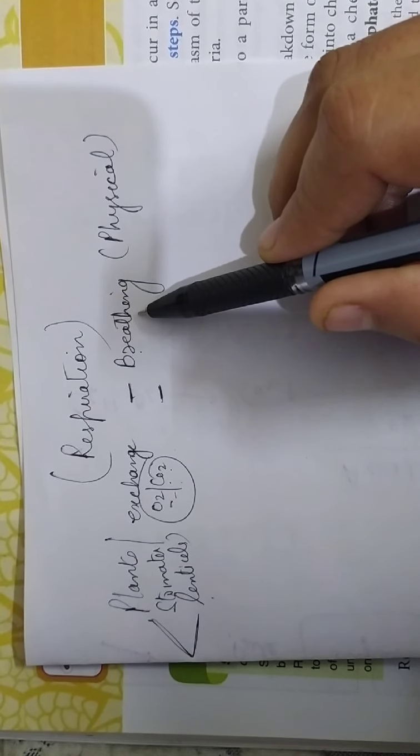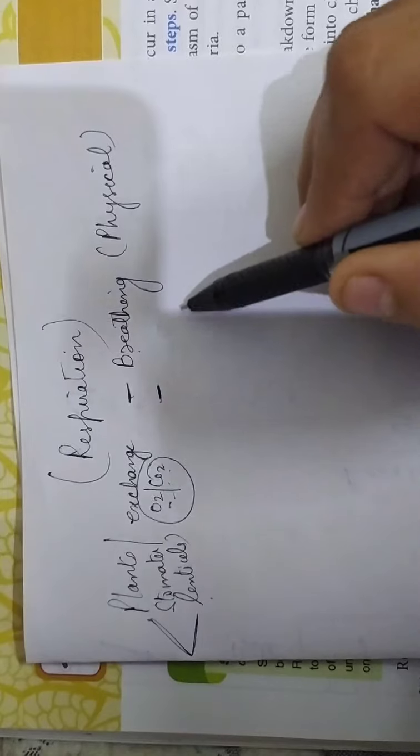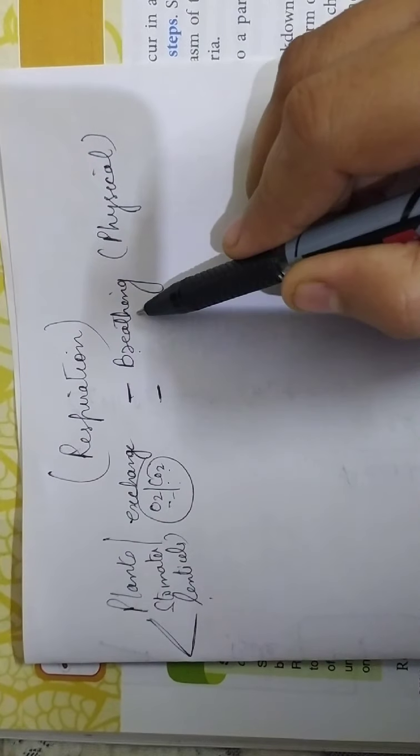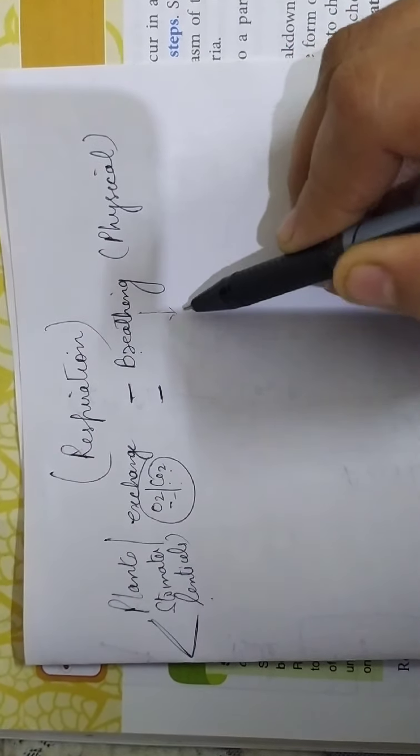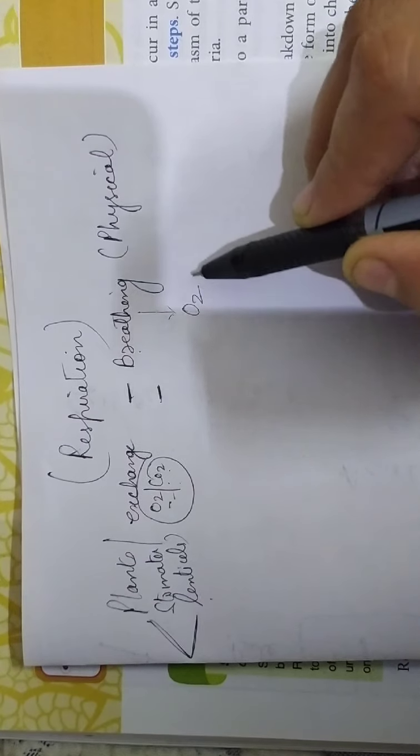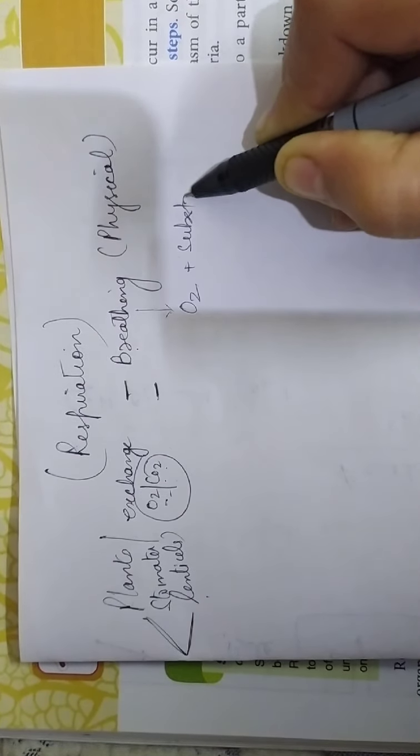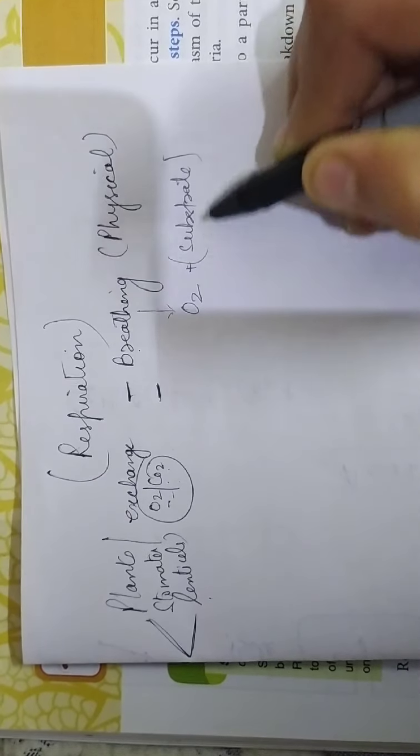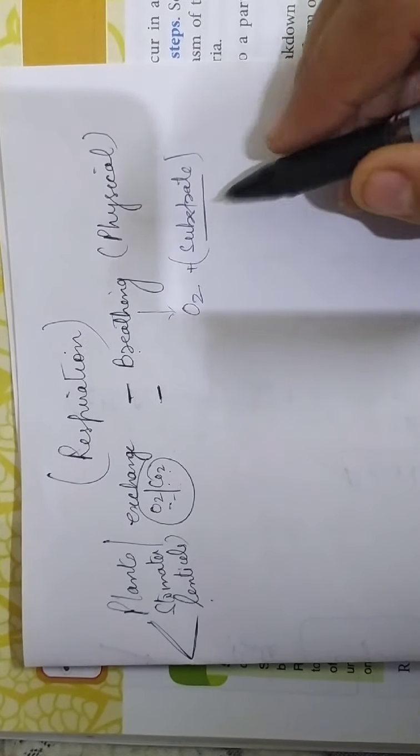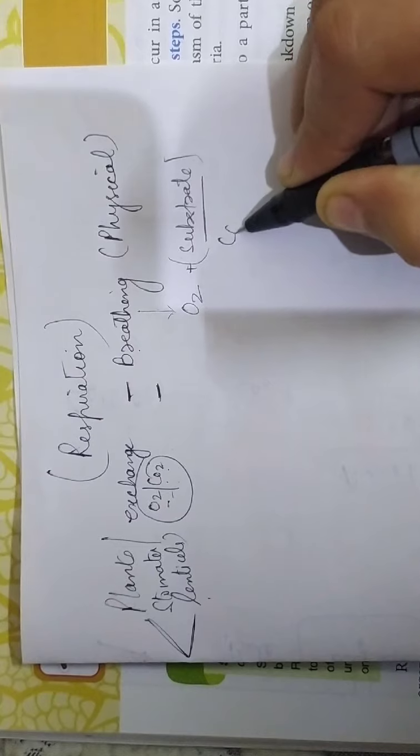Now further, these gases are taken to the cells. The second step, what happens inside the cells? This oxygen which goes inside the cell causes oxidation of the substrate. Substrate here means the digested food. The digested food is in the form of glucose.